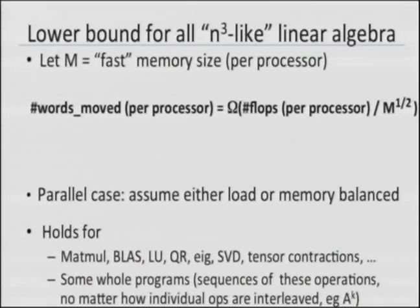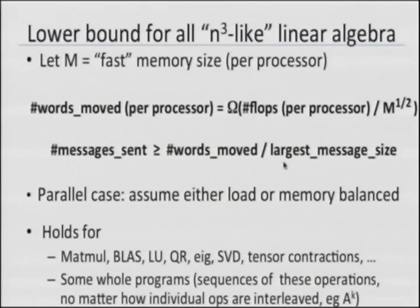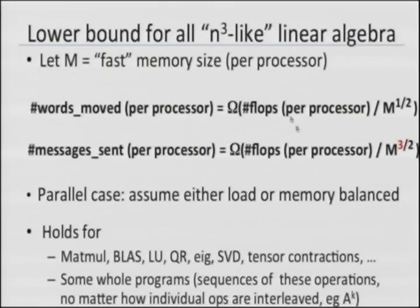What about the lower bound on the number of messages? The simplest approach: send the largest possible messages. Take the number of words to move, divide by the largest message size — the whole memory M — and that gives a lower bound on the number of messages. Dividing changes the exponent, and that's the goal: send that few messages. I'm pleased to say this work won a best paper prize.